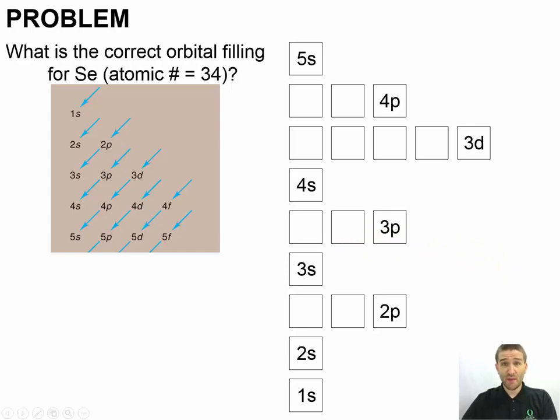Now, while you're doing this, make sure that you're paying careful attention to your spins. Make sure you're following Hund's rule and the Pauli exclusion principle. Make sure that you're doing all the things you need to do to fill this. Go ahead and pause the video and give this one a try.